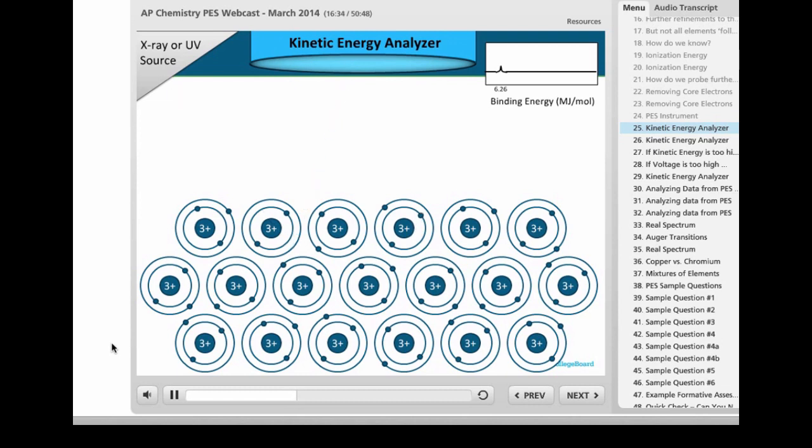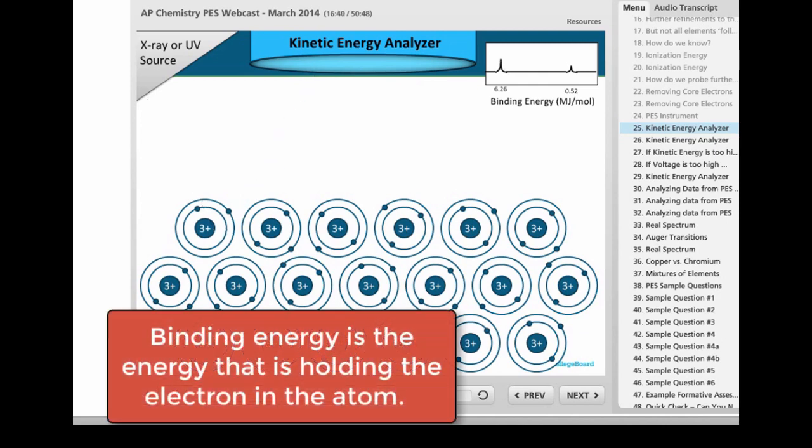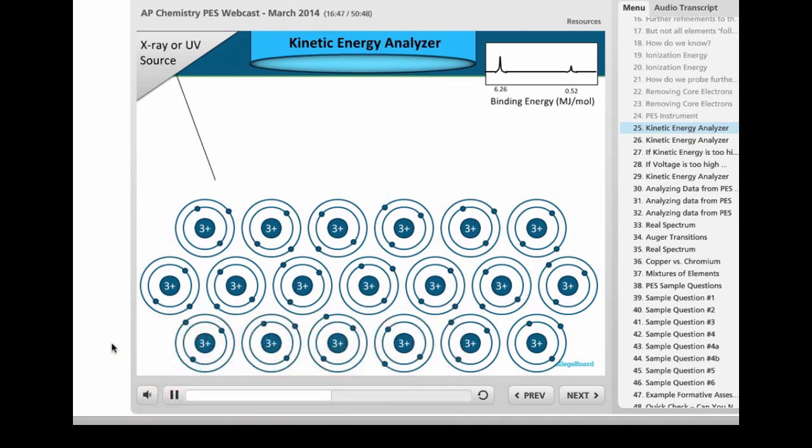And so if we look at now our valence electron, you can see the valence electron has a different binding energy than the core electrons. So core electrons seem to build up the peak at about 6.26. And then that core electron amplifies that peak even further.